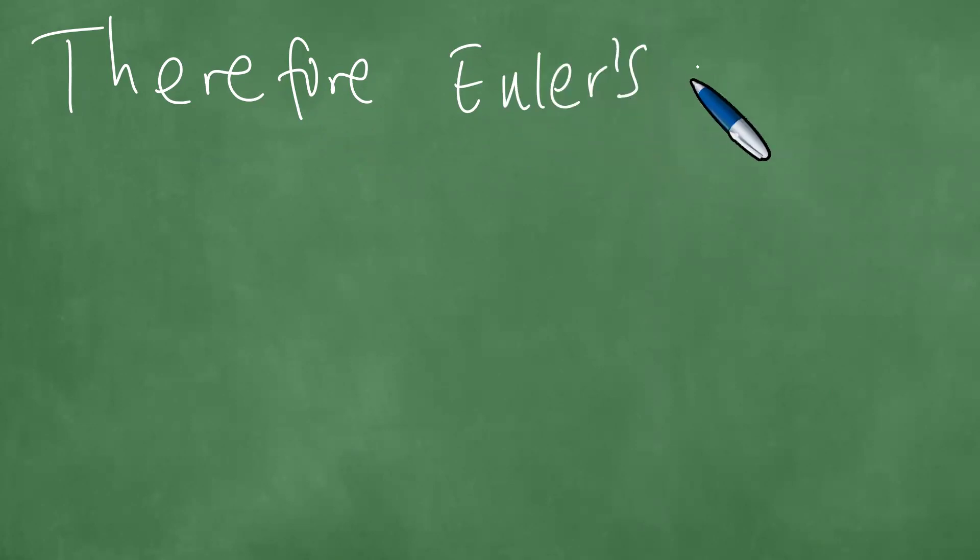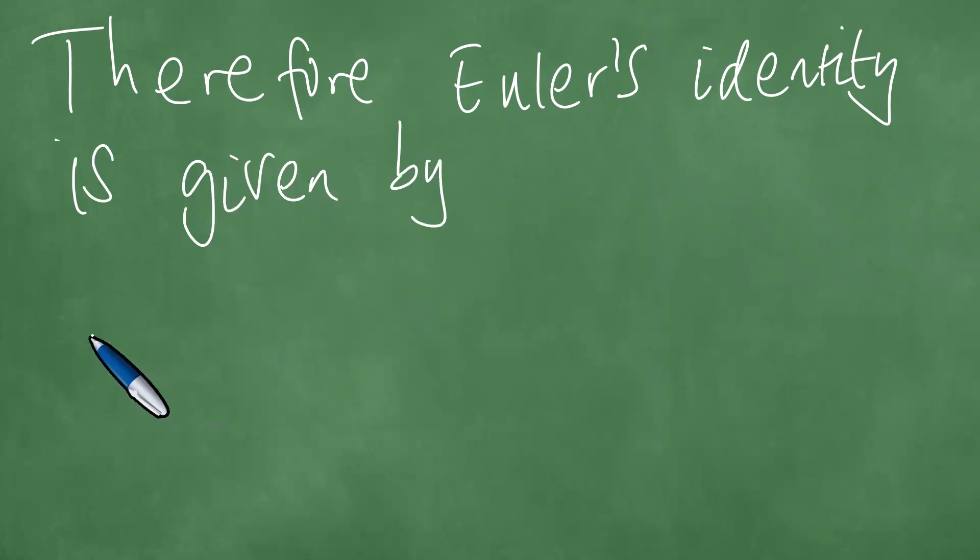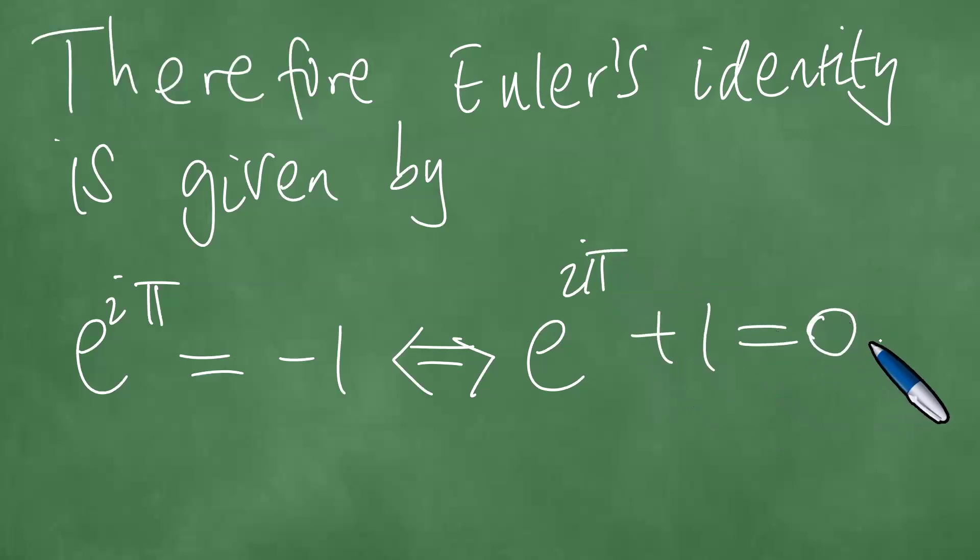Therefore, Euler's identity is given by e to the i pi equals minus one, and this is true if and only if e to the i pi plus one equals zero.